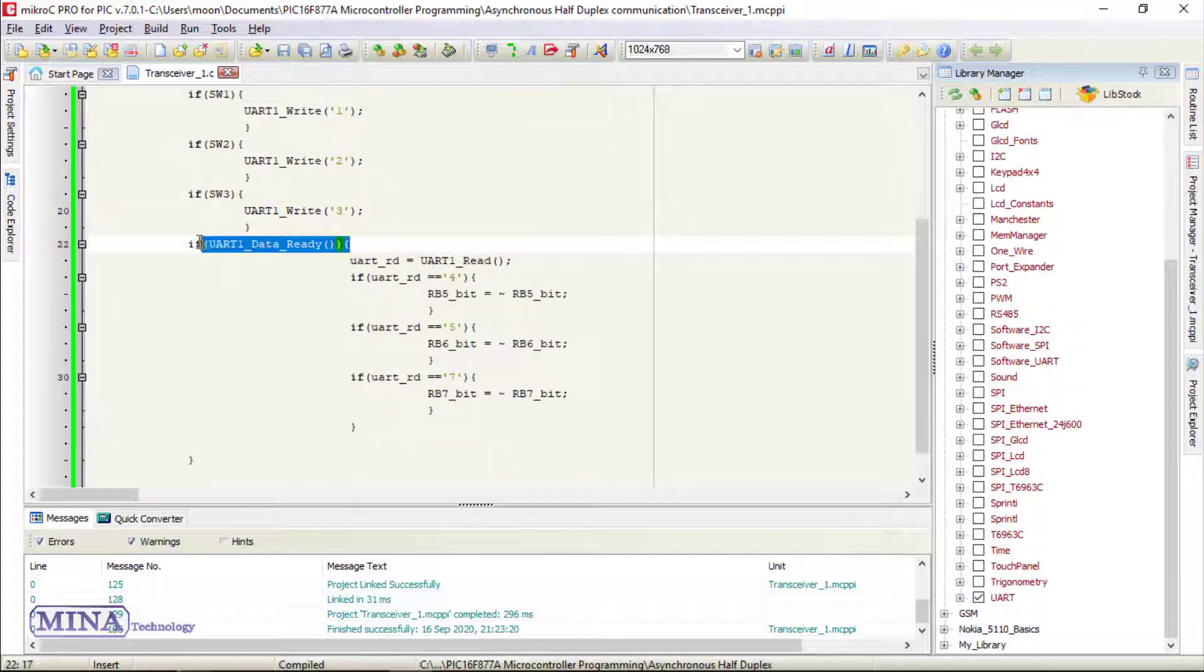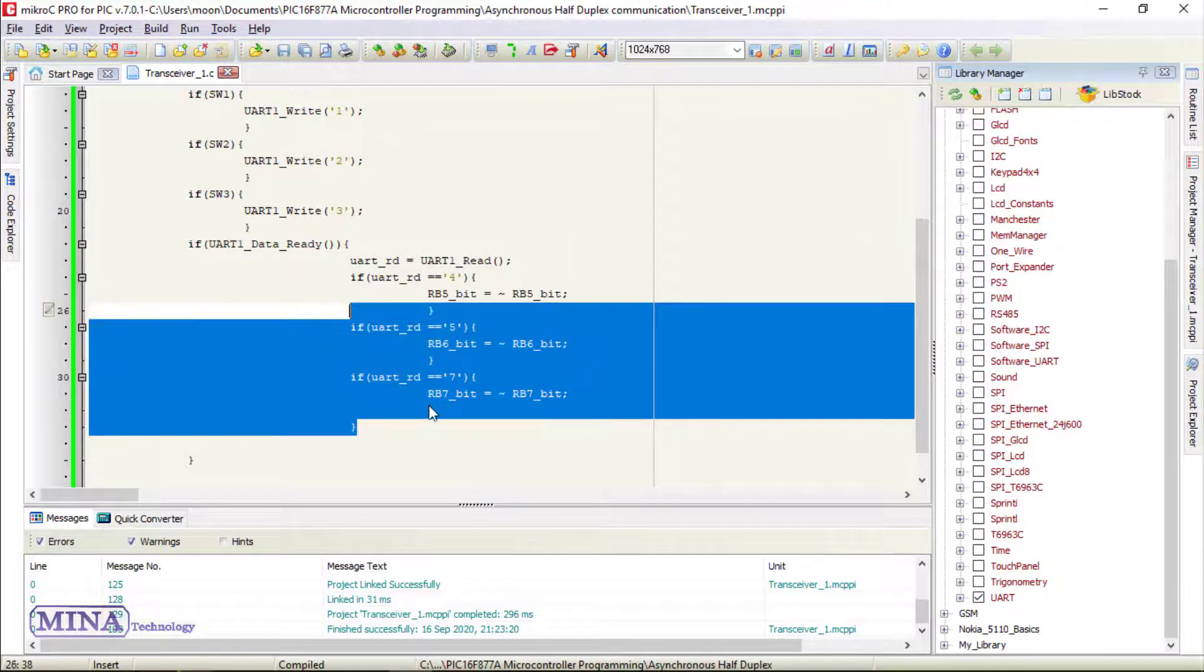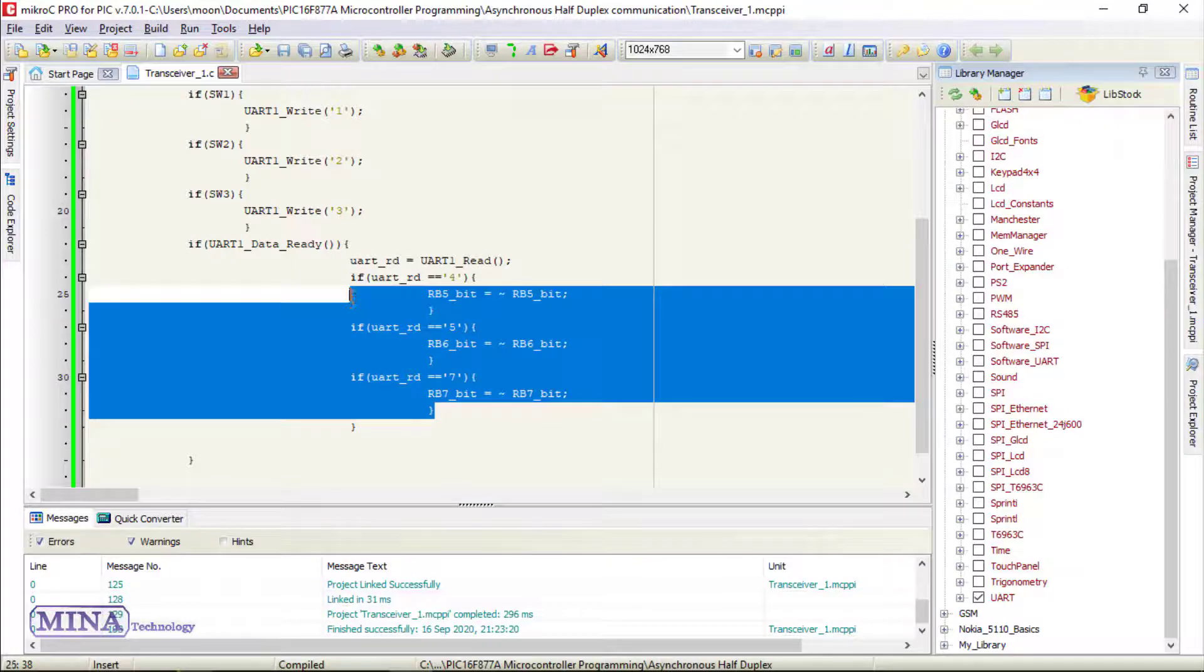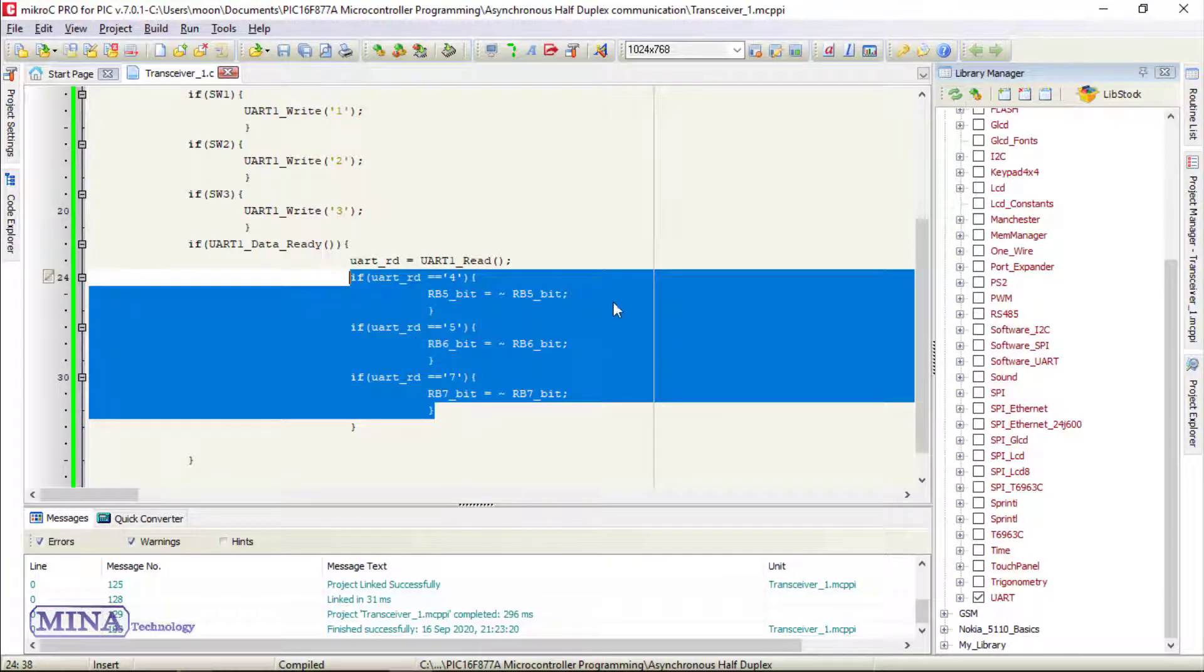Next, we have created an if statement which checks whether there is data to be received. If data is received in buffer register, the UART1_Data_Ready function returns one. Using the UART_Read function, we read and store the data into the UART_RD variable. Next, we have created 3 if statements which compare the UART_RD variable with predefined values.